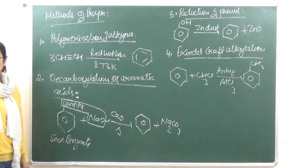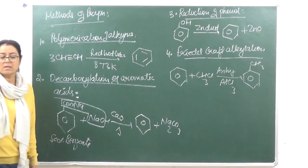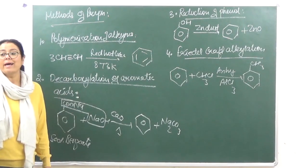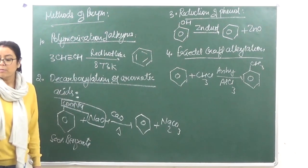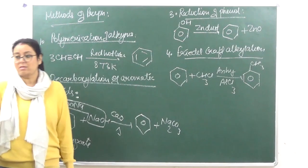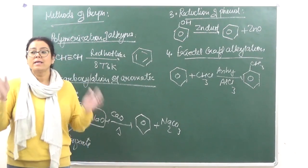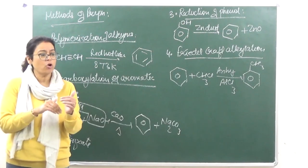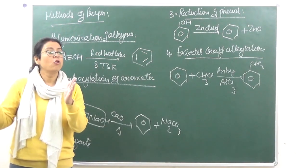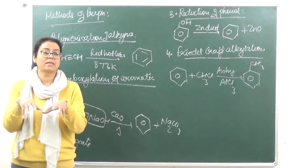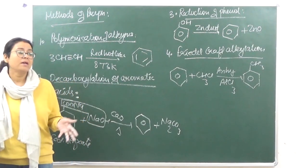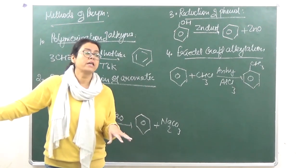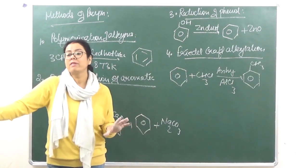With this, we finish the methods of preparation of benzene. In the next class, we are left with two things: the physical and chemical properties of benzene, and a very important topic — the directive influence of substituents on the benzene ring. This covers which functional groups activate or deactivate the benzene ring, and where the incoming group is directed on the ring.